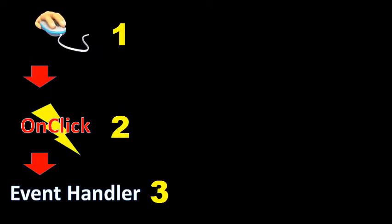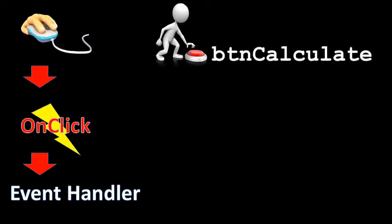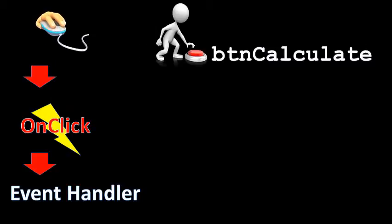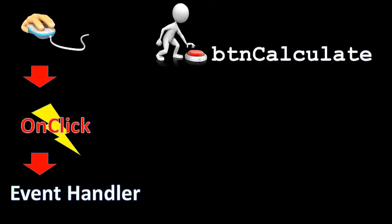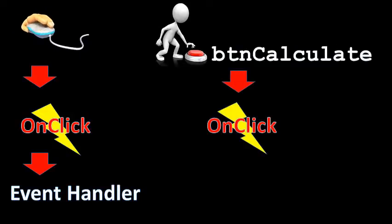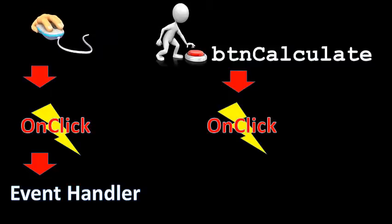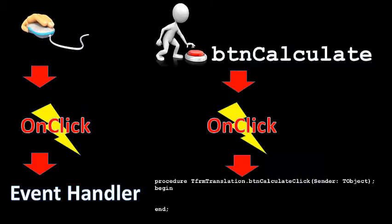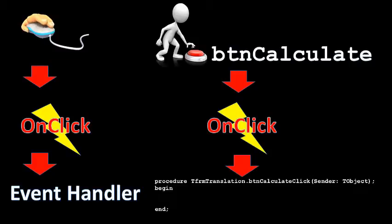Let's look at this in a different way to make sure we understand the concept. Assume you have a button called BTN Calculate. BTN Calculate will never do any calculation if the user doesn't perform an action on it. The user must place the mouse on the button and press the left mouse button to click on its surface. This triggers the button's onClick event, which tells the Delphi compiler to look for the code instructions linked to BTN Calculate's onClick event — an event handler named BTNCalculateClick. The instructions written between the begin and end statements of that event handler will then be executed.